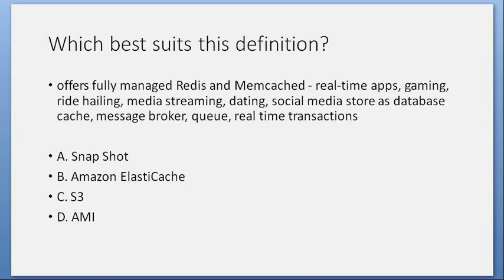Which best suits this definition? Offers fully managed Redis and Memcached, for real-time apps, gaming, ride-hailing, media streaming, dating, social media; stores as database cache, message broker, queue, real-time transactions. A. Snapshot. B. Amazon ElastiCache. C. S3. D. AMI. Answer: B. Amazon ElastiCache.